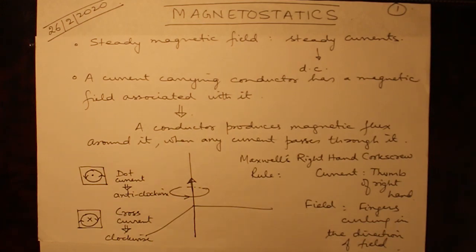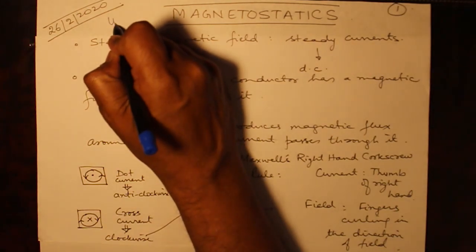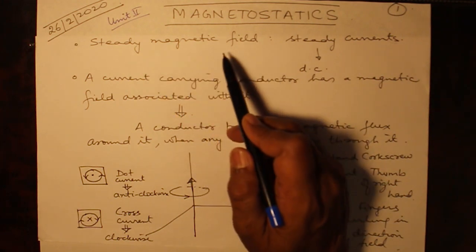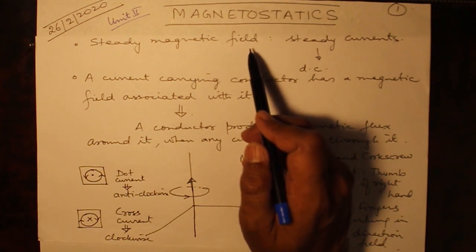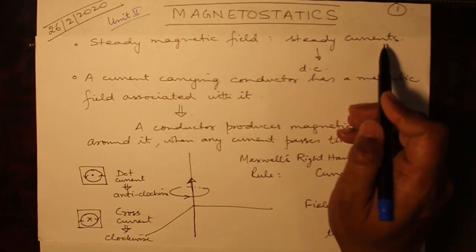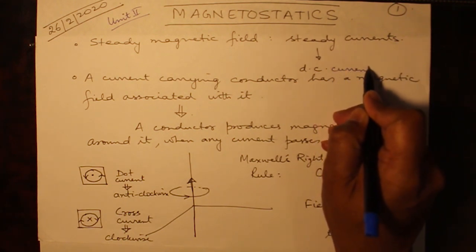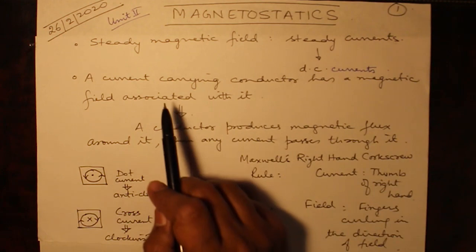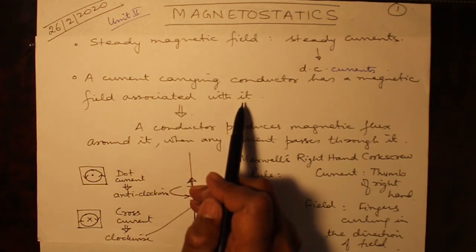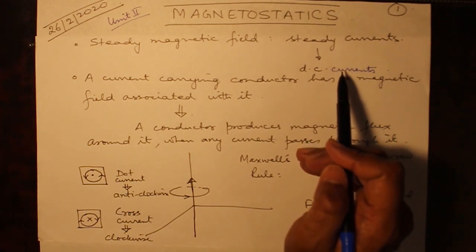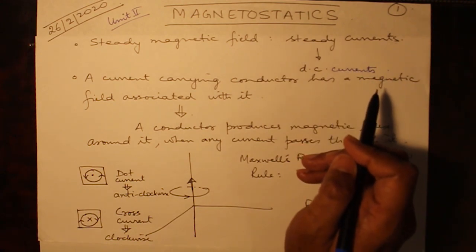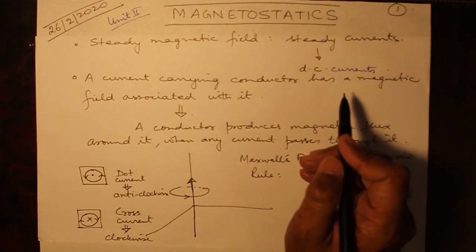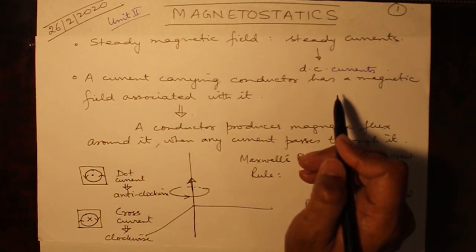Let's start the topic of magnetostatics, which is the first topic of unit 2. Magnetostatics deals with steady magnetic fields — those which are produced because of steady currents. Steady current is nothing but the DC current you are already aware of. A current-carrying conductor always has a magnetic field associated with it. If it's a DC current, the magnetic field will be unidirectional; if it is sinusoidal, the magnetic field is sinusoidally varying.